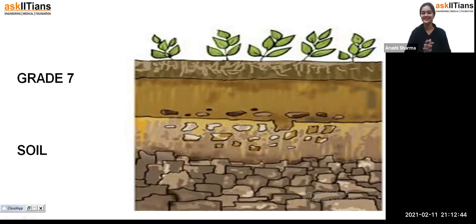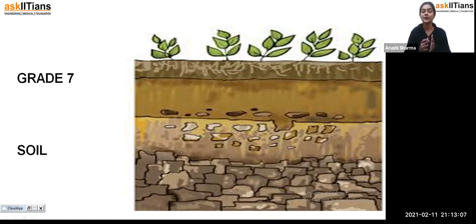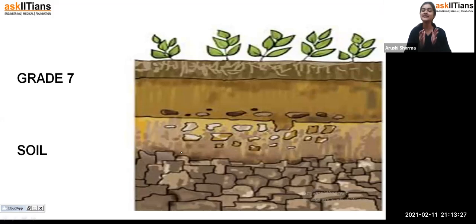Hello everyone, welcome back to the class. In our last session we were discussing soil — specifically the soil profile, the distinctive horizontal layers called Horizon A, Horizon B, and Horizon C. We also discussed humus, weathering, soil erosion, its effects, and how to prevent it. In this session we are continuing with the same chapter as some topics were left.